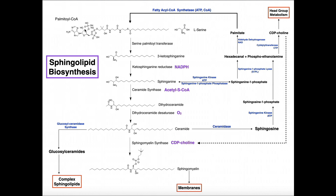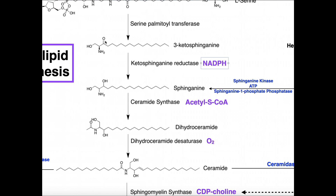The first enzyme in the biosynthesis is serine palmitoyl transferase. This combines the palmitoyl-CoA — specifically the fatty acid part — with the amino acid serine, giving us the first structure called 3-ketosphingonine. The next enzyme is ketosphingonine reductase, which uses reducing equivalents from NADPH to reduce the carbonyl (C=O double bond) into an alcohol, giving us the molecule called sphingonine.